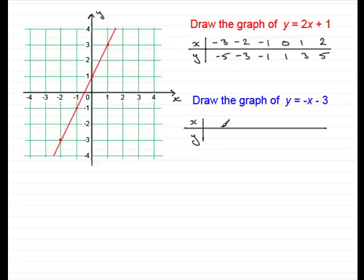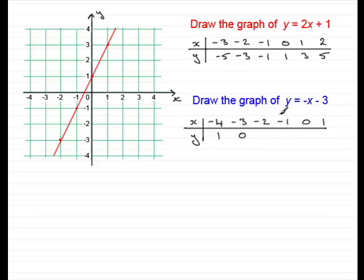This time we'll draw it between minus 4 and x equals 1, so we'll have the integers minus 4, minus 3, minus 2, minus 1, 0, and 1. Putting minus 4 into the equation: minus minus 4 is 4, minus 3 is 1. Putting minus 3 in: minus minus 3 is 3, take away 3 is 0. Putting minus 2 in: minus minus 2 is 2, and 2 minus 3 is minus 1. Filling in the other values, you'll find minus 2, minus 3, and minus 4.